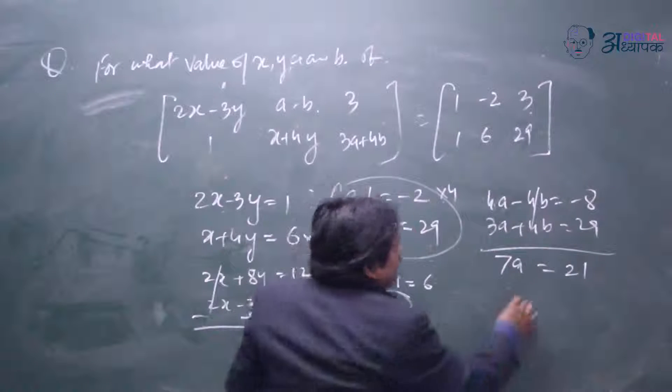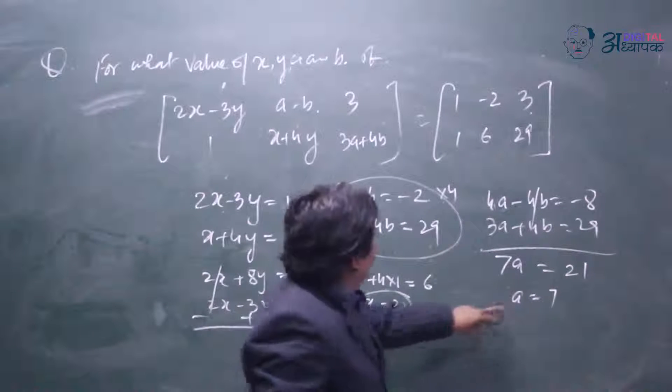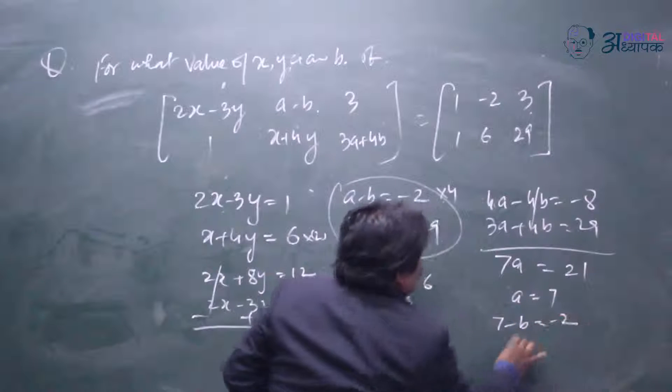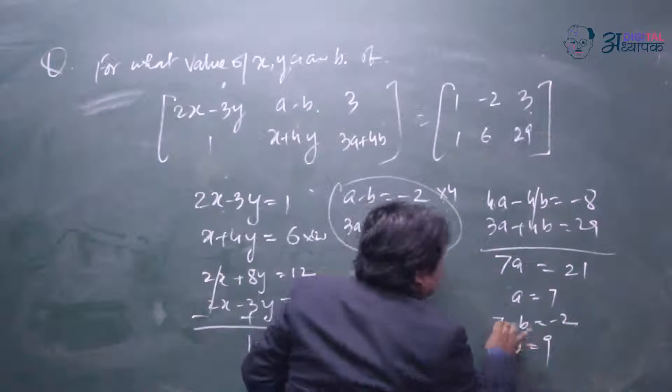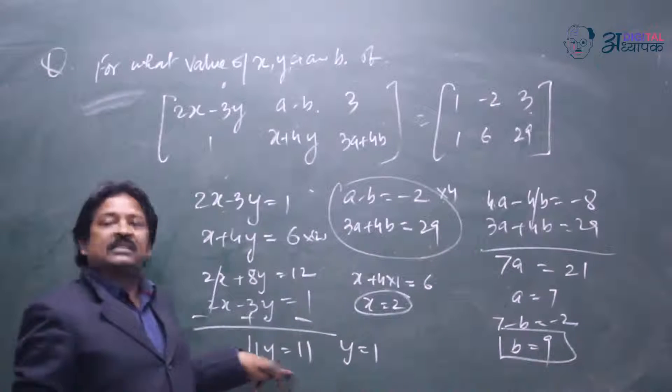So a is equal to 7. If the value of a is 7, we put this value: 7 minus b equal to minus 2. So b is equal to 9. So this is the value of a and b, and this is the value of x and y.